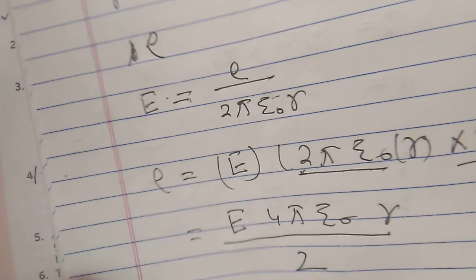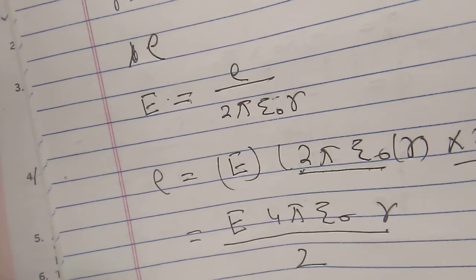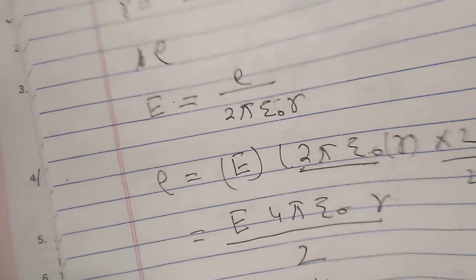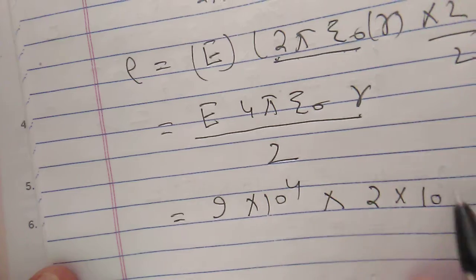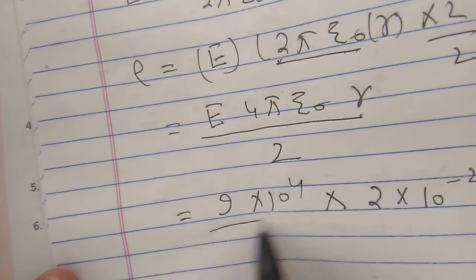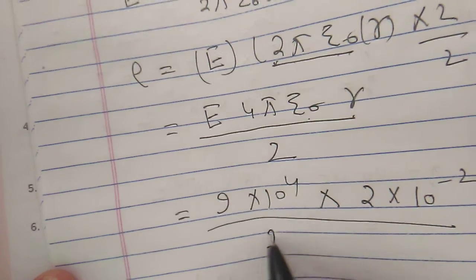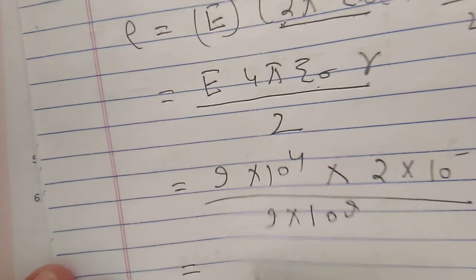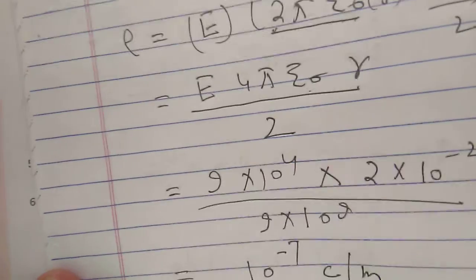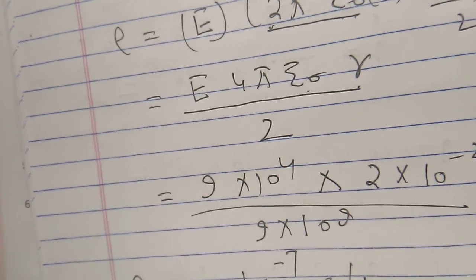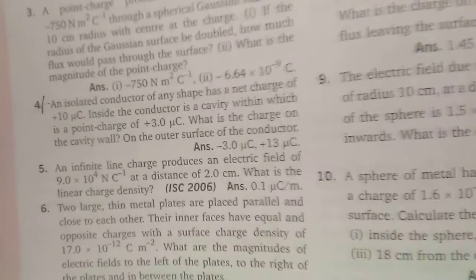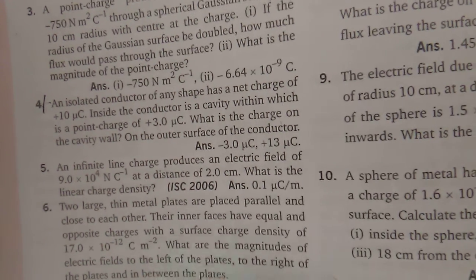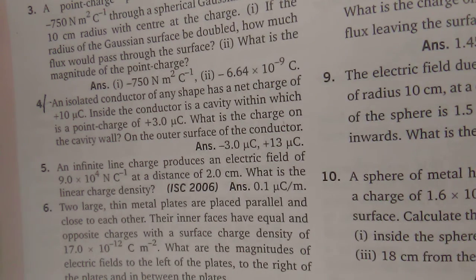Substituting the values: E = 9 × 10⁴, r = 2 × 10⁻², and 4πε₀ = 9 × 10⁹ in the denominator. On solving, we get 10⁻⁷ coulomb per meter. This is the linear surface charge density. Some more questions remain — we will do them later or you can try them yourself. In the next video, we will start with the next chapter: electric potential. Thank you very much.